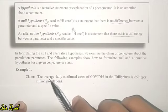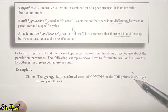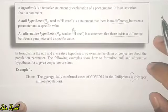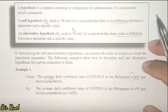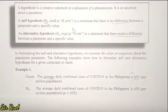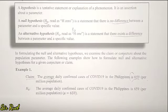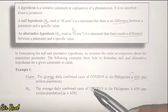Looking at the claim, the parameter used is average, and the word used is 'is,' meaning there is no difference — 659 is the value. So this claim is the null hypothesis. The null hypothesis states: the average daily confirmed cases of COVID-19 in the Philippines is 659 per million. The claim and the null hypothesis are the same because the claim already contains equality. Since the word 'is' was used, it is a null hypothesis.